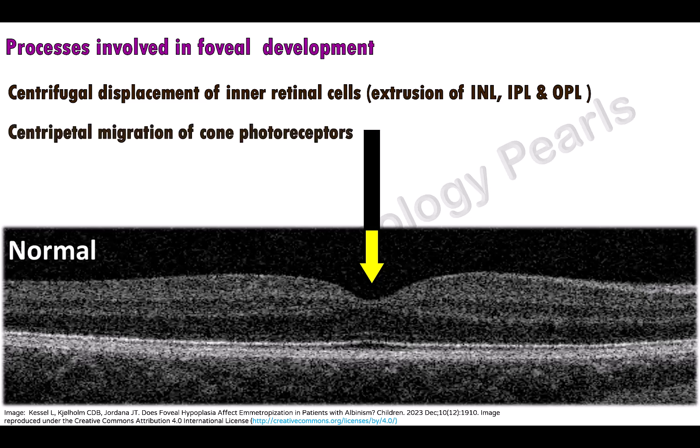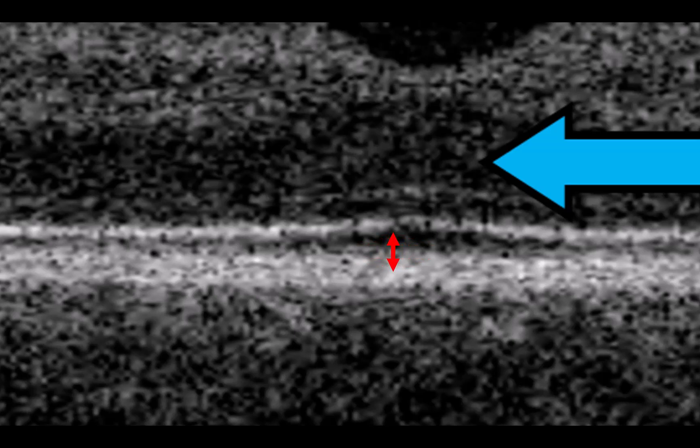Centripetal migration of cone photoreceptors manifests as outer nuclear layer widening. Cone specialization involves both a decrease in diameter and an increase in length of the cone outer segments. This manifests on OCT as outer segment lengthening — that is, lengthening of the distance between the ellipsoid zone and the retinal pigment epithelium.